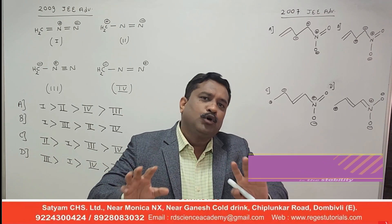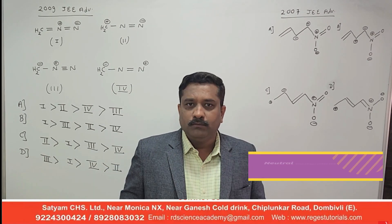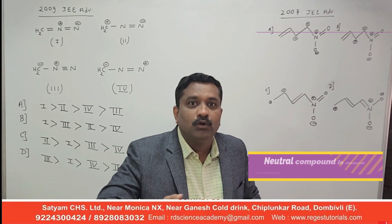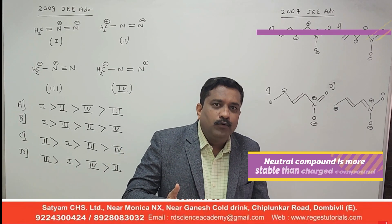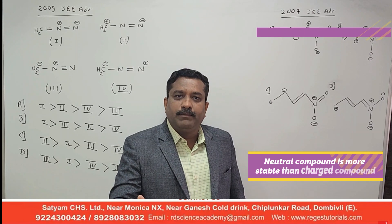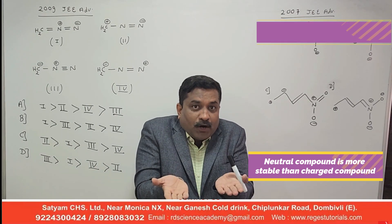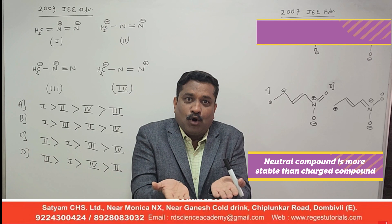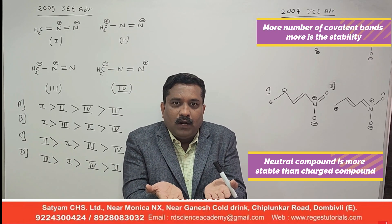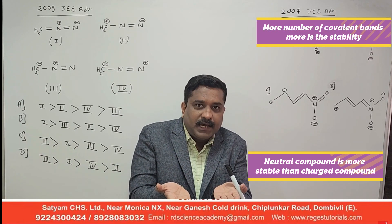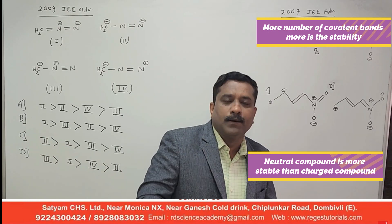But if two compounds have the same number of covalent bonds, then the second rule gets activated. Rule 2: a neutral compound is more stable compared to a charged compound. If both compounds have the same number of covalent bonds, check whether one is neutral and the other has charges — the neutral compound will be the more stable one.